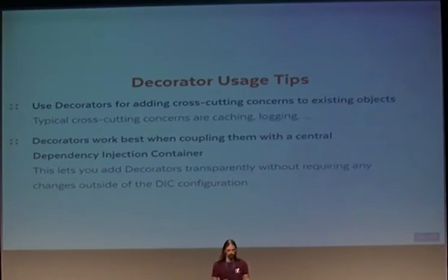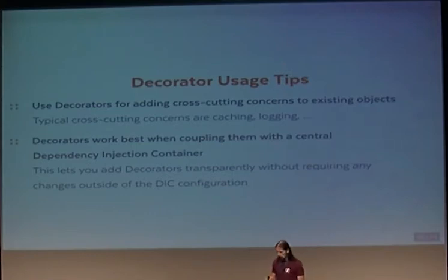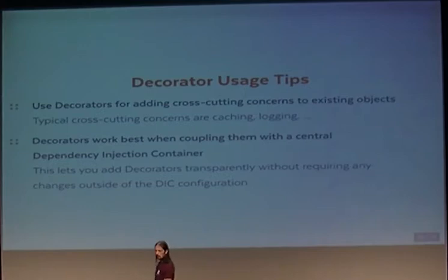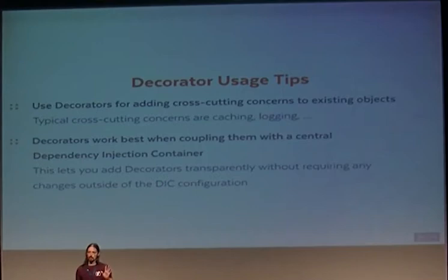The decorator works best for cross-cutting concerns. It works best when combined with a dependency injection container — one central place where you configure how objects are instantiated. In that one place you can say: whenever I need remote data, return cached remote data instead. And the rest of the code doesn't need to care whether caching is active or not.